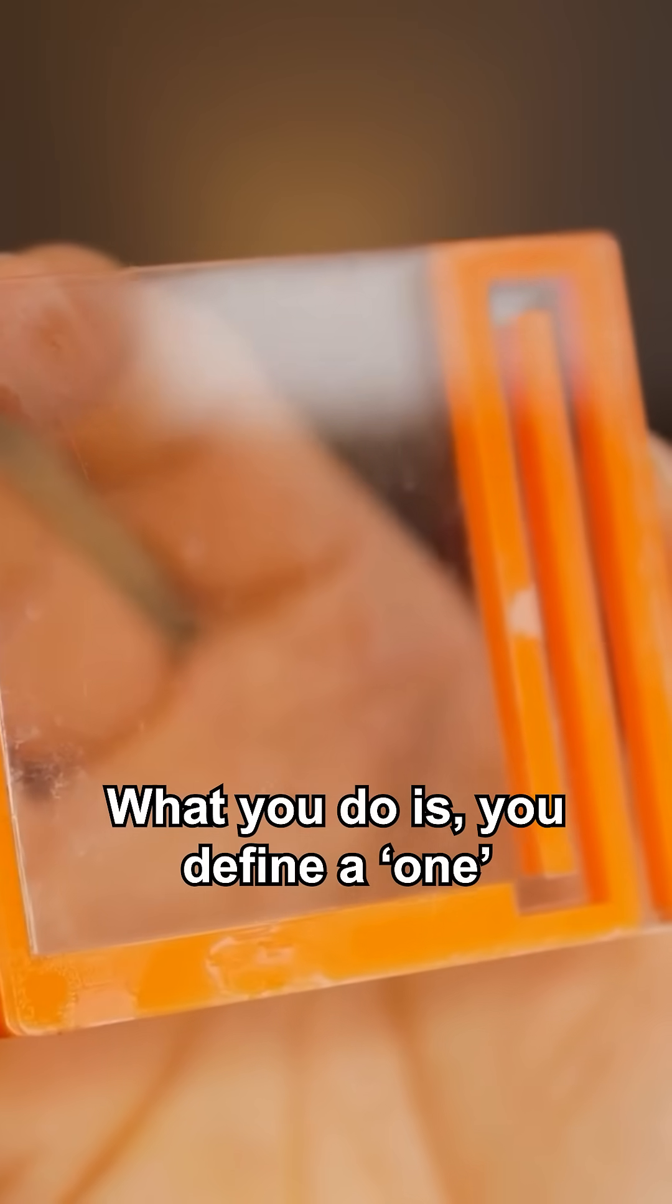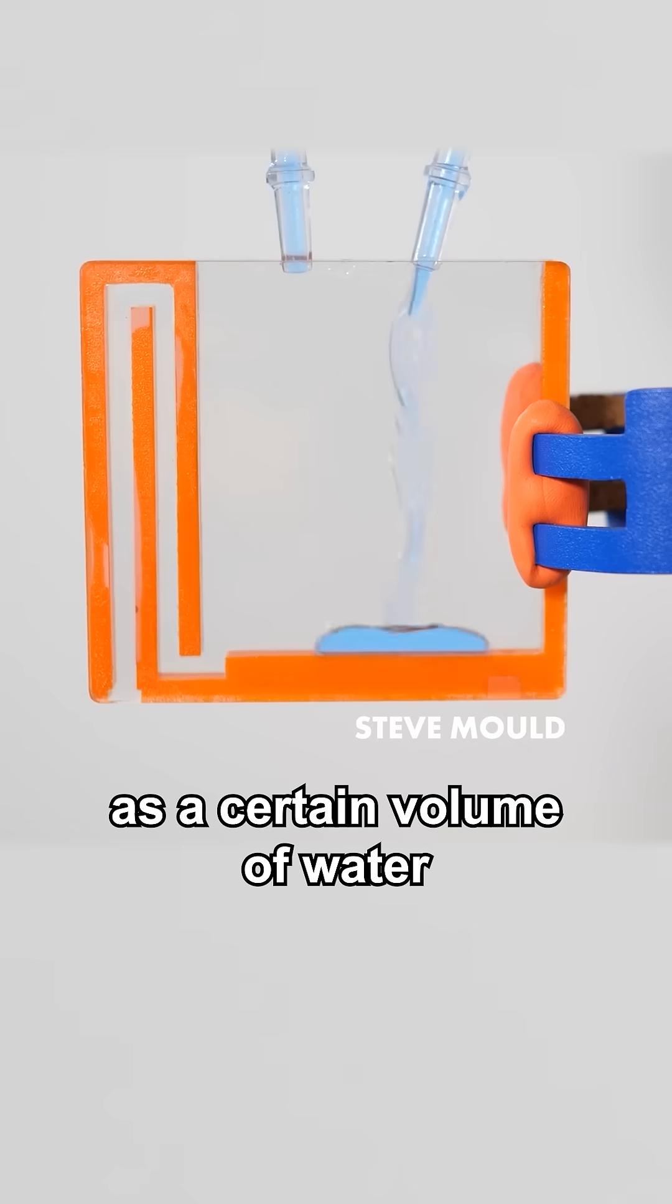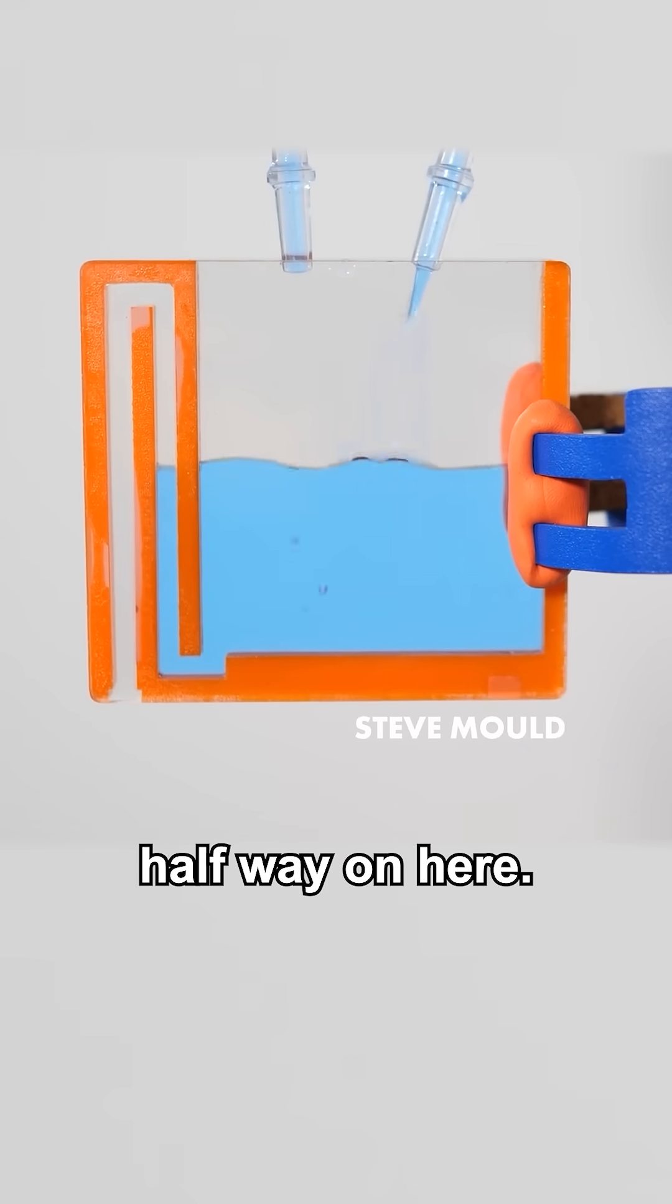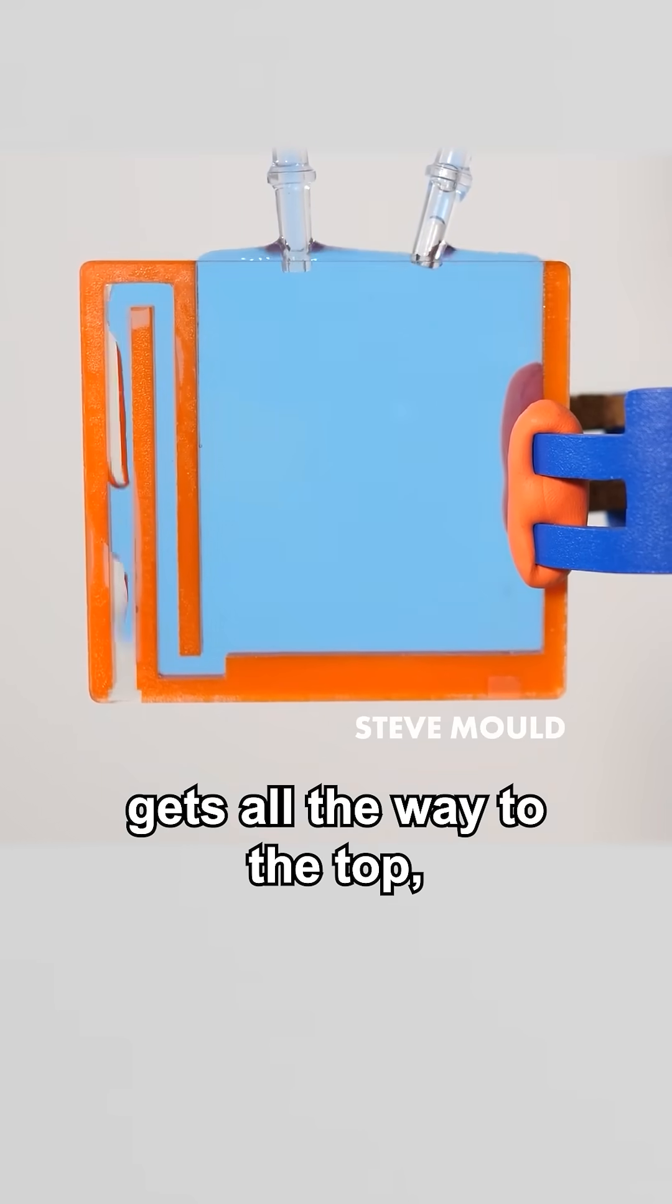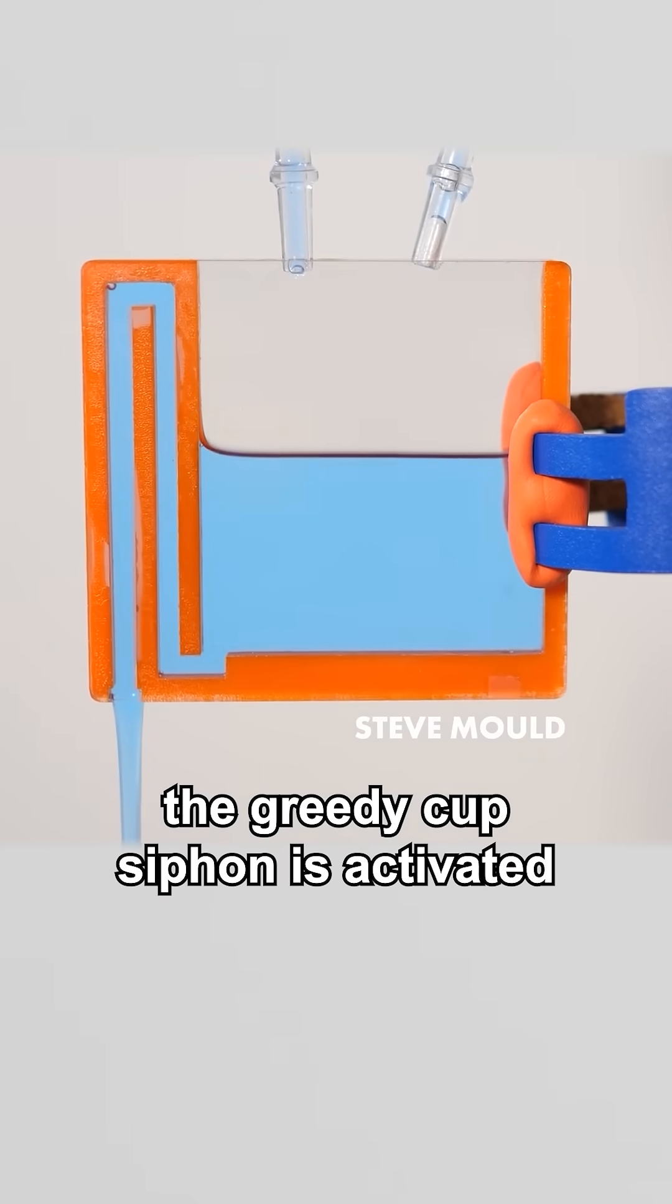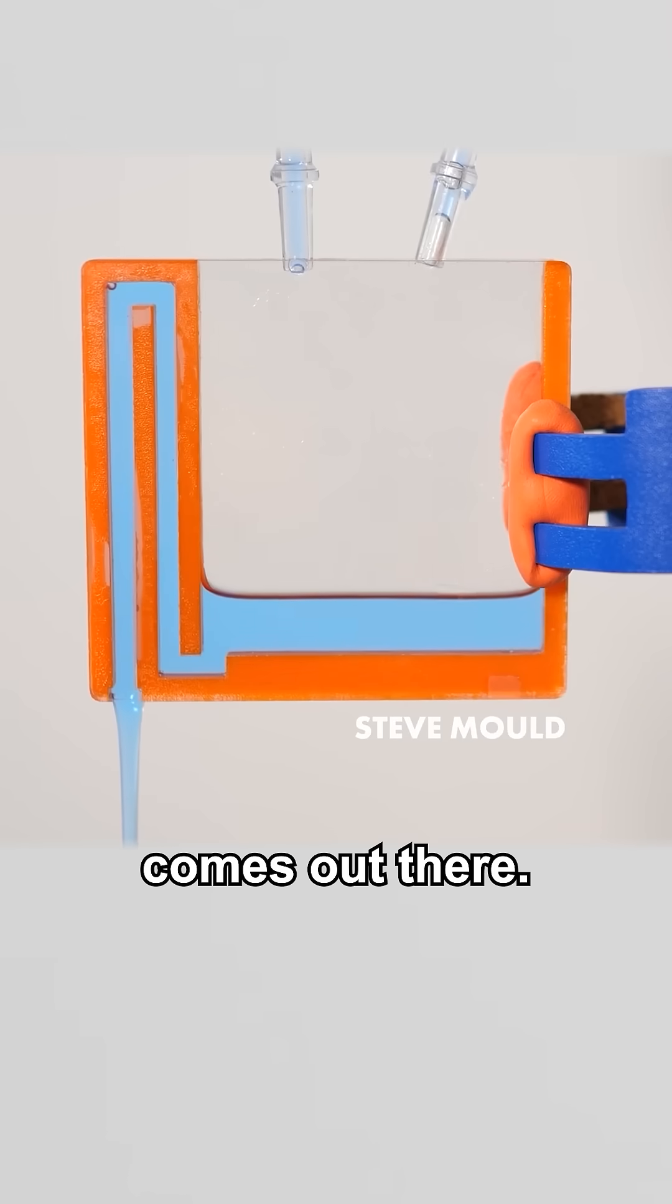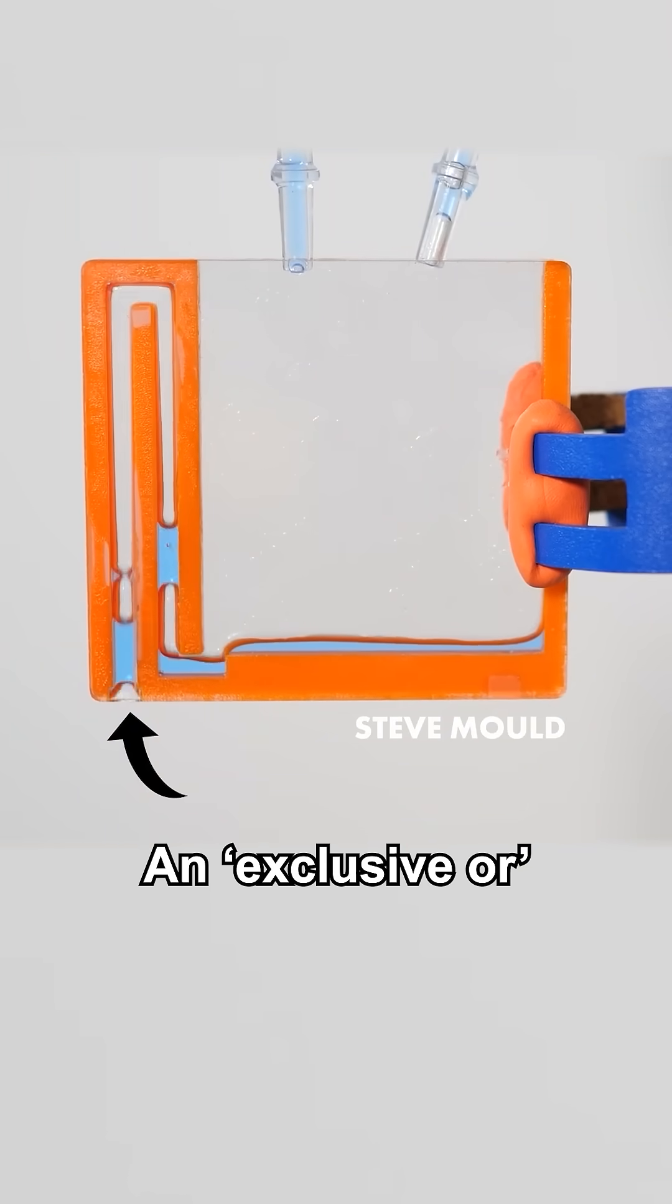What you do is you define a one as a certain volume of water that gets just above halfway. So if you put two ones in, the volume of water gets all the way to the top, the greedy cup siphon is activated and your AND response comes out there.